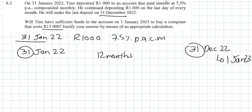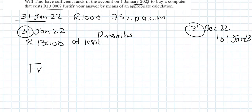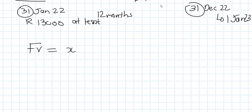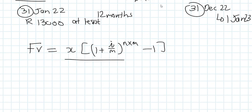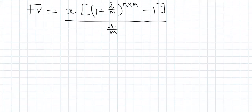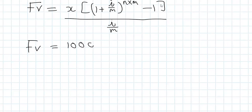The computer costs 13,000 rand, so he needs at least 13,000 rand by the 1st of January 2023. This is a future value question — he's making monthly deposits and will have some amount in the future. We start with the future value formula from the formula sheet, where x is our monthly deposit.